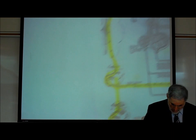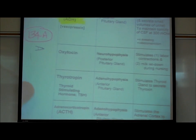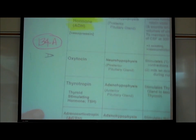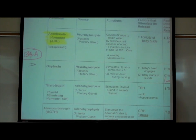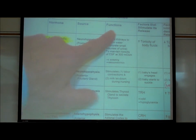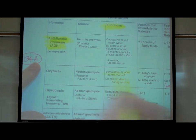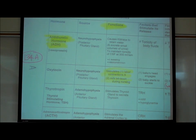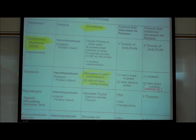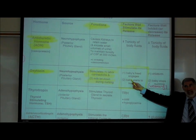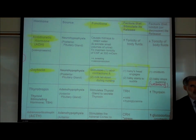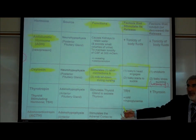Let's summarize by looking at page 134A for oxytocin. Oxytocin is released from the neurohypophysis. Its functions are: it causes labor contractions and it causes milk letdown during nursing. The factors that stimulate its release are the head of the baby engaging and pushing down on the lower part of the uterus, or the baby suckling. That triggers a neuroendocrine reflex where a sensory neuron sends a signal up to the parturition milk letdown reflex center in the hypothalamus.